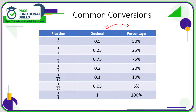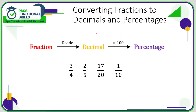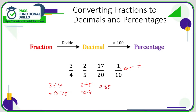To convert fractions to decimals and percentages: to go from a fraction to a decimal, all you need to do is divide the top by the bottom. So for three quarters, type 3 divided by 4 into the calculator — that gives 0.75. Two fifths: 2 divided by 5 is 0.4. Seventeen twentieths: type 17 divided by 20 — remember the line in a fraction means divide — and that gives 0.85. One tenth is 1 divided by 10, which is 0.1.